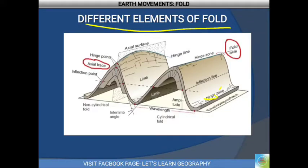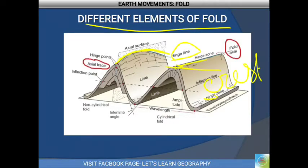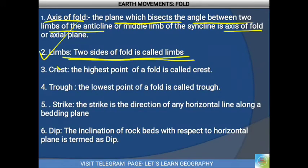Next is hinge line — when the different points of the upper surface of the fold are joined by an imaginary line, that is called the hinge line. Next is crest — the highest portion of the fold is called the crest, and the lowest portion is called the trough.